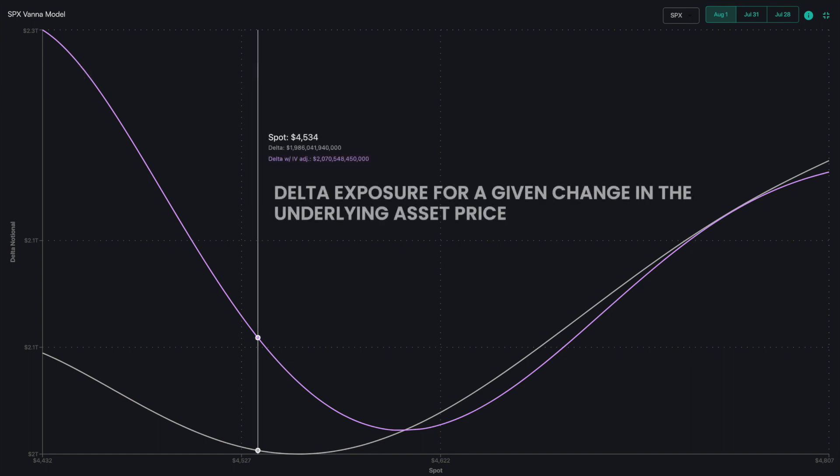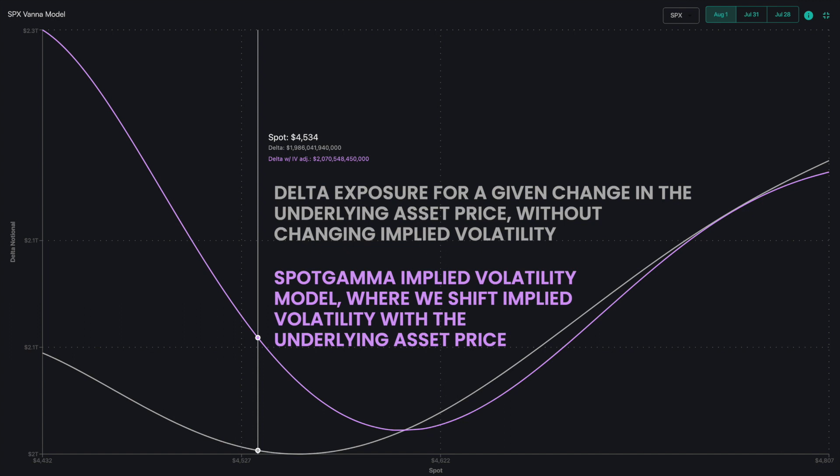The gray line shows the delta exposure for a given change in the underlying asset price without changing implied volatility. The purple line is based on a complex spot-gamma implied volatility model wherein we shift implied volatility along with the underlying asset price.